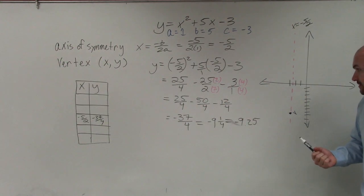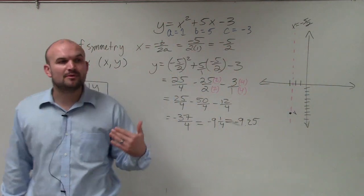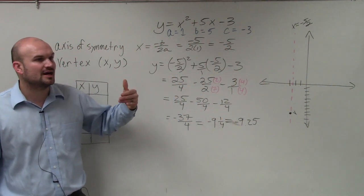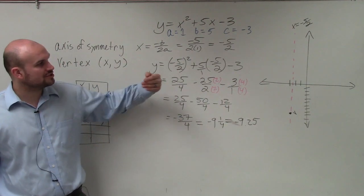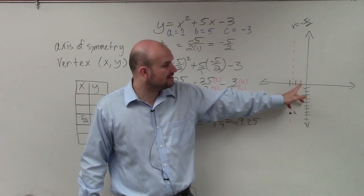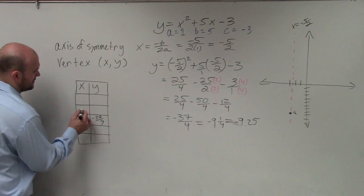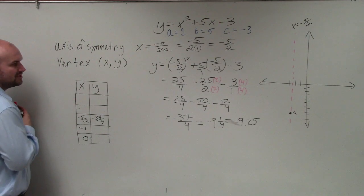So now the easy part, though, I think, is now we just need to choose two points to the left or to the right. And remember, my advice was choose two points that are closest to the axis of symmetry, but that are also closer to 0. So the two points that I'm going to choose are negative 1 and 0.